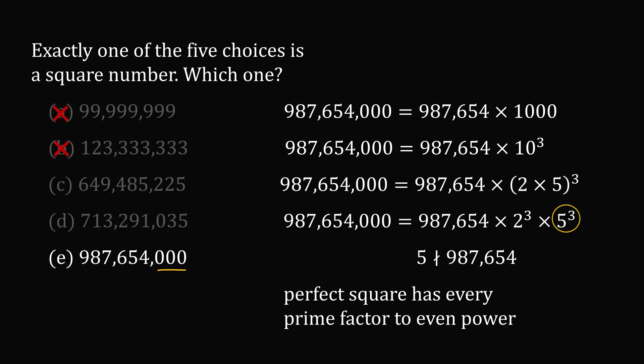But every perfect square must have every prime factor raised to an even power. This option has 5 raised to an odd power, which is 3. So option E cannot be a perfect square. So we will eliminate this option.